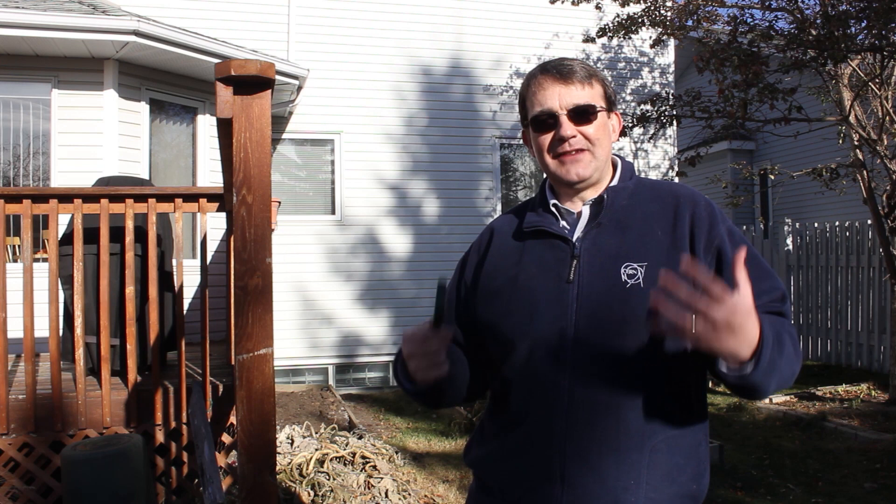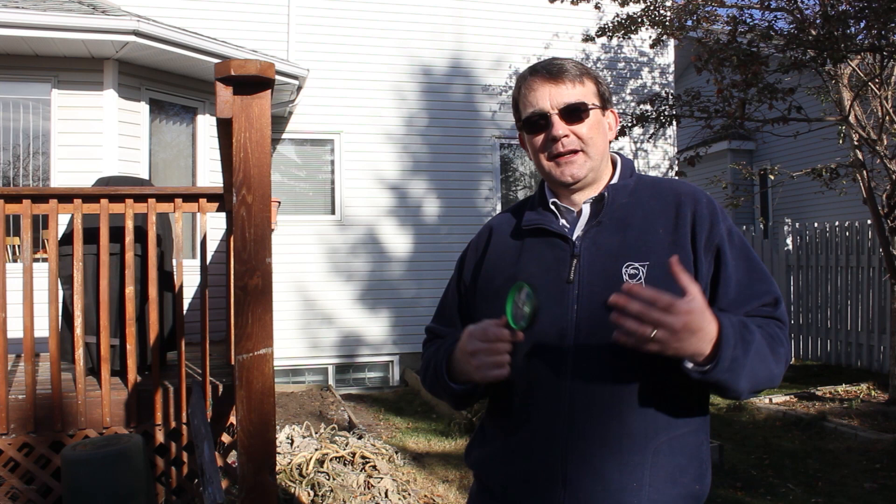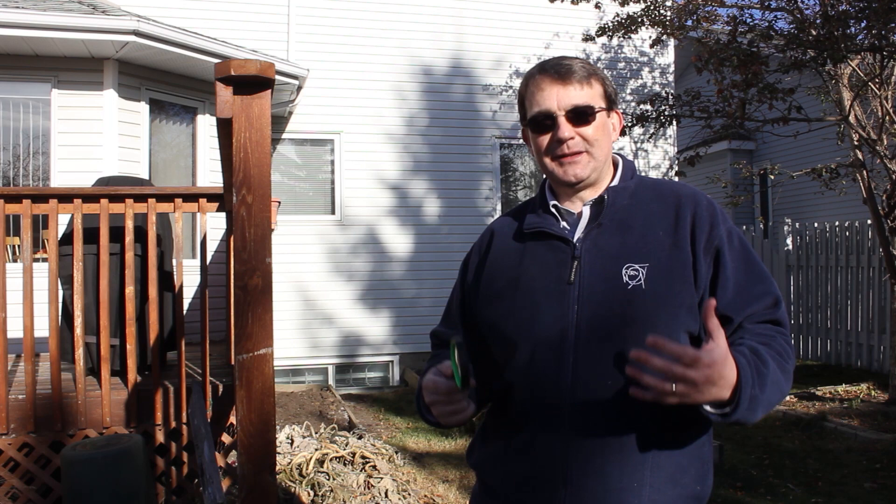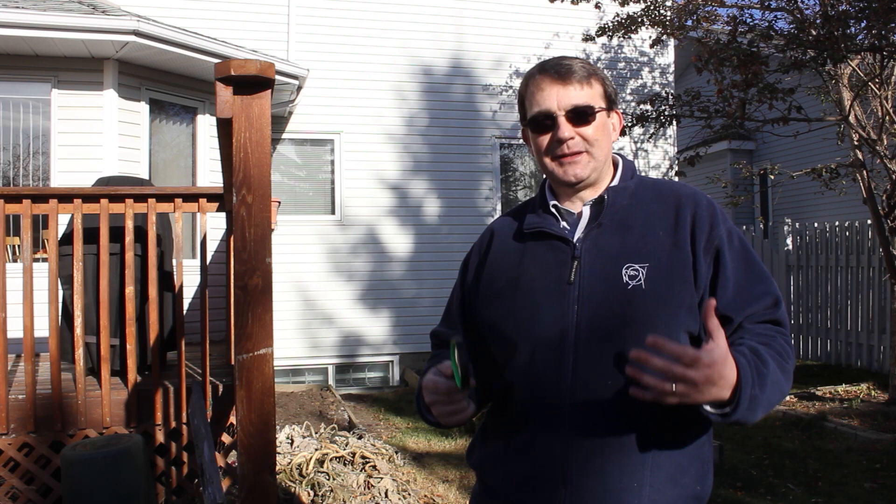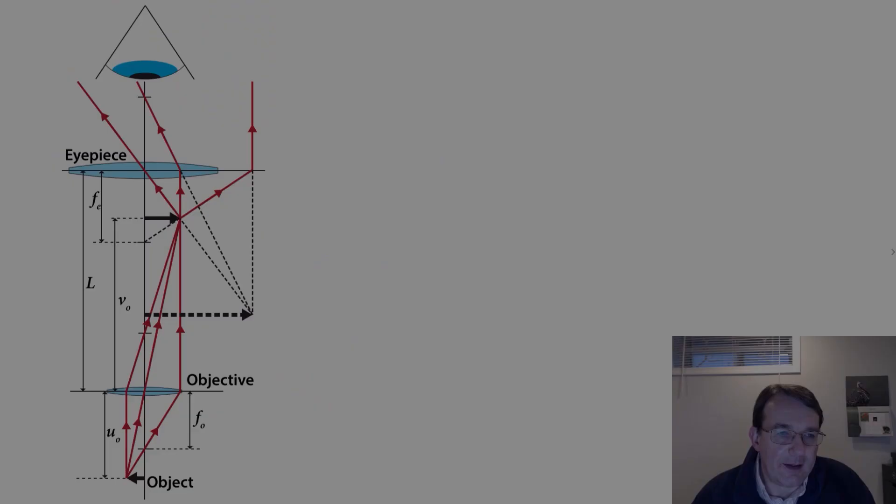To understand how a simple compound microscope works, let's have a look at some detail and do some calculations on the magnification factor. Here's our ray diagram of a simple compound microscope. The compound microscope consists of two lenses. At the bottom we have a converging lens that is close to the object, called the objective lens. At the top we have another converging lens that's close to the eye, called the eyepiece lens. The distance between them is shown as distance L, essentially the length of the tube mounting the two lenses.